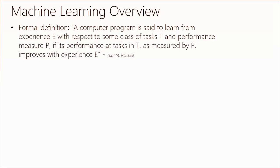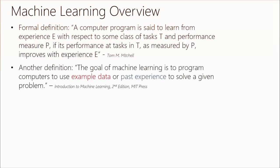Let's jump back in the way-back machine. The formal definition: a computer program is set to learn from experience E with respect to some class of task T and performance measure P, if its performance at task T as measured by P improves with experience E. That's Tom Mitchell — completely 100% accurate, but also completely 100% difficult to understand if you're not used to reading technical language.